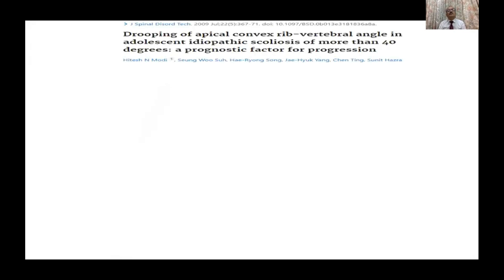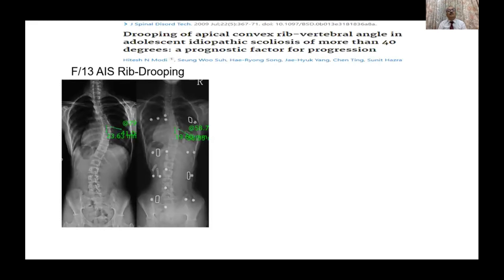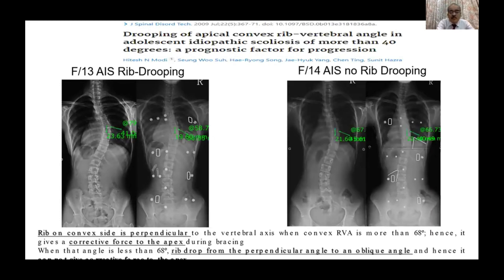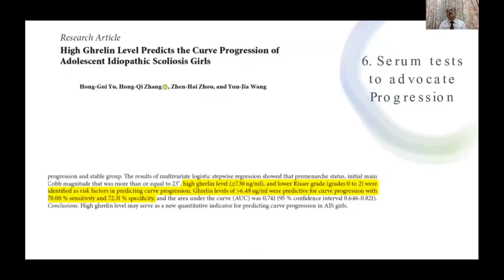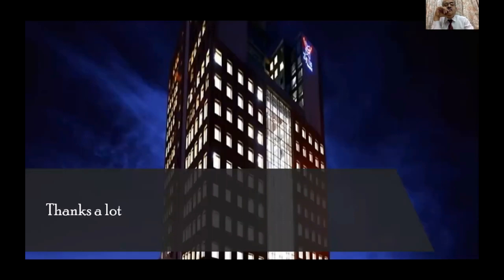The authors also developed a paper about drooping of the apical convex rib, suggesting that if the rib vertebral angle shows drooping after bracing treatment, the perpendicular corrective forces applicable to the vertebra will not be effective due to regrouping, and therefore the curve will progress. The last factor is serum ghrelin — if a high ghrelin level is present in certain patients, it can predict curve progression over time. These are the commonly identified factors affecting curve progression in adolescent idiopathic scoliosis.